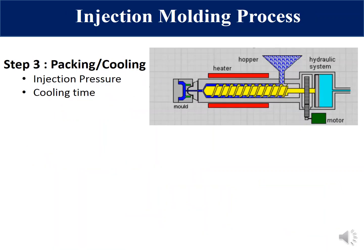The third step in the injection molding process is packing and cooling. In this step, polymer melt is compressed to get better product uniformity, and at the same time is cooled into a solid product. The two important parameters are injection pressure and cooling time. Higher injection pressure leads to better packing and uniformity, but injection pressure must be balanced by the clamping pressure — the pressure between the two mold sections. If injection pressure is much higher than the clamping pressure, it will lead to flashing.